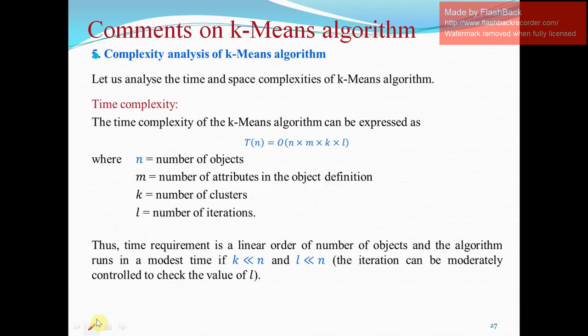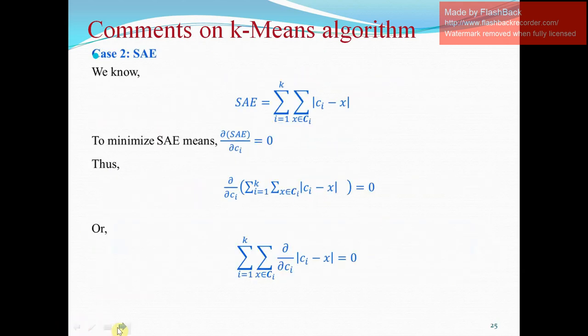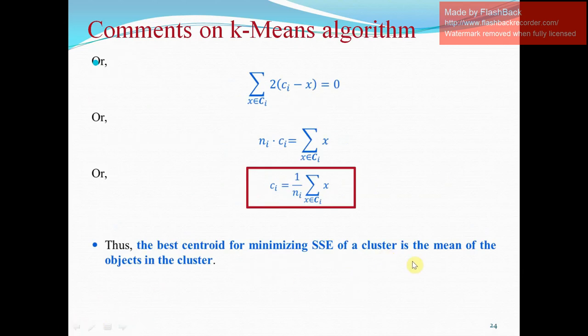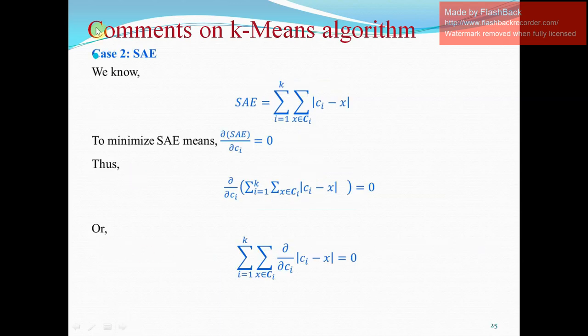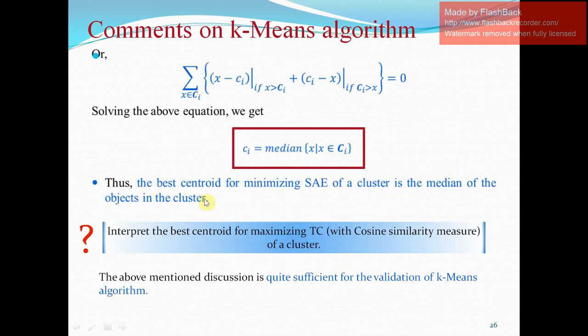The best standard for minimizing SSE for a cluster is the mean of the objects in the cluster. It is given by the formula ci equals 1 divided by NI, that is summation of x. To calculate SAE or to minimize SAE to 0, we put it for the equivalent to 0 to the formula. Then the formula is ci equals the median of subset of x where x belongs to ci. Thus, the best standard for minimizing SAE of a cluster is the median of the objects in the cluster.